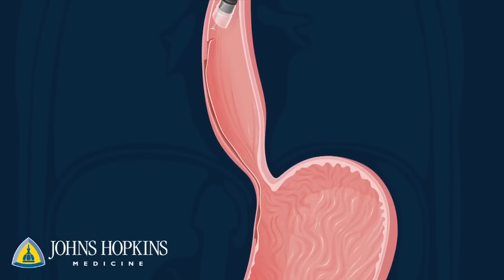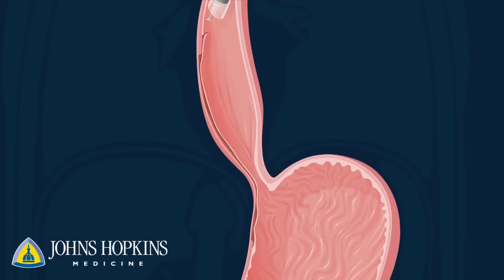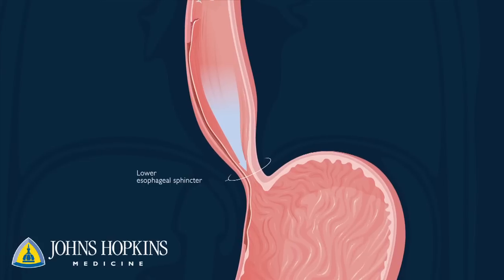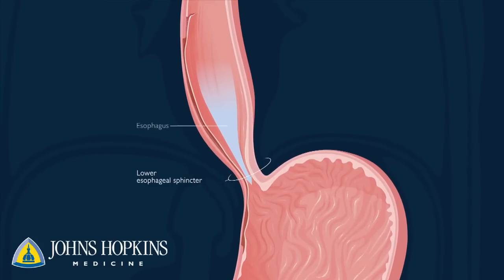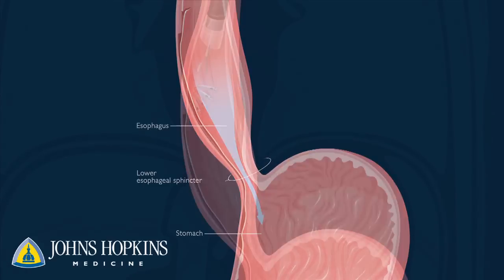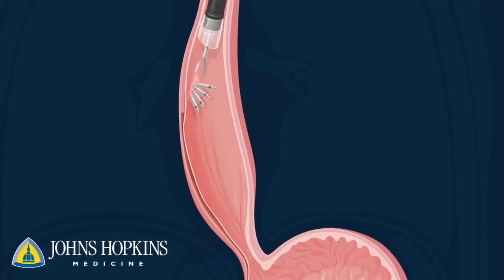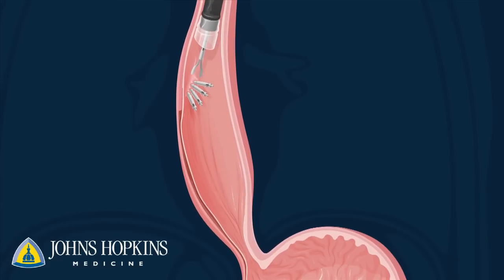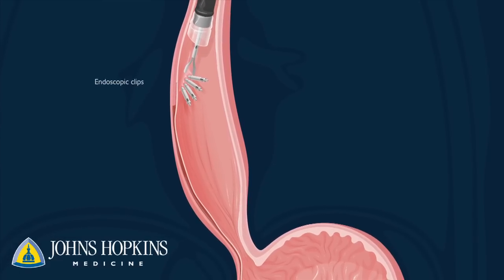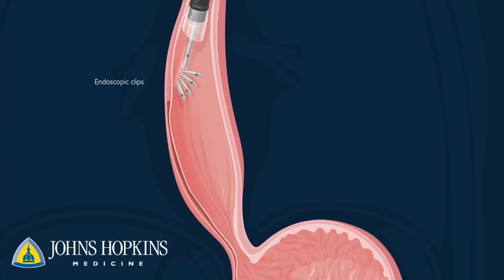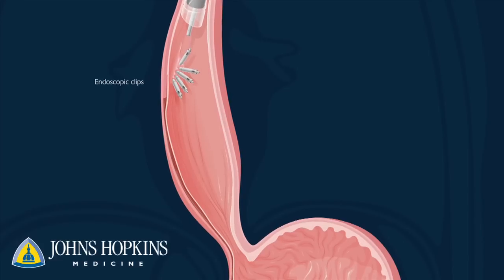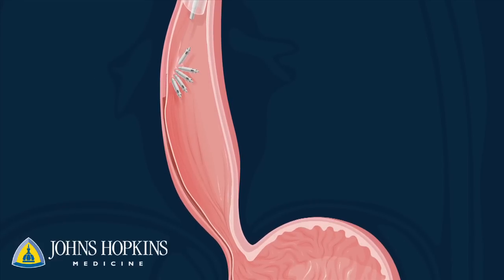This myotomy relieves the tightness of the sphincter, allowing the normal passage of food from the esophagus into the stomach. At the end of the procedure, the doctor uses endoscopic clips to close the incision in the lining of the esophagus, and the endoscope is removed.